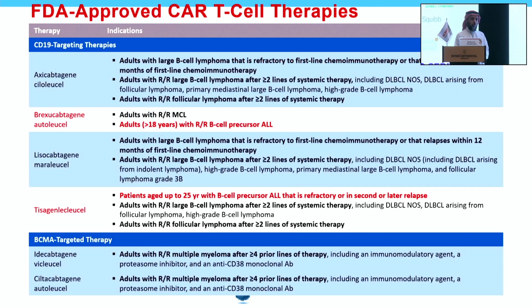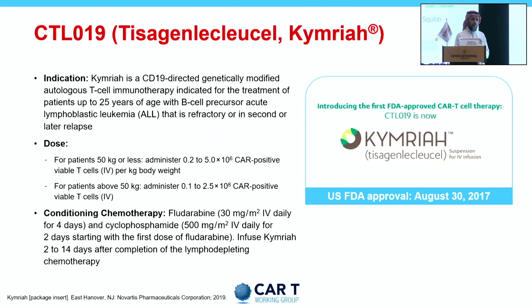FDA has approved CAR-T cell therapy in different diseases. In ALL specifically, there are two products approved: Brexucabtagene autoleucel for adult patients aged 18 or older with relapsed refractory B-cell ALL, and Tisagenlecleucel for pediatric patients up to age 25 with ALL that is refractory or in second or later relapse.